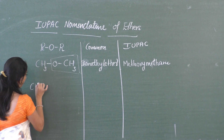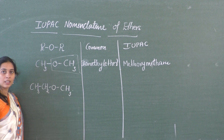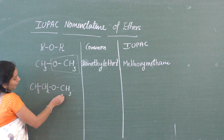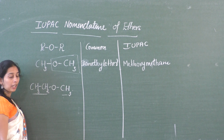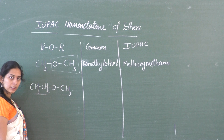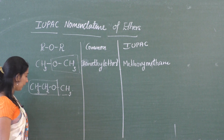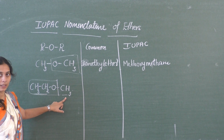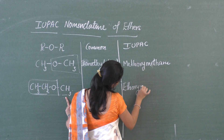If you have a group like CH3CH2OCH3, this is a non-symmetrical ether containing one methyl group on one side and an ethyl group on the other. You have to select the chain with the greater number of carbon atoms as the parent chain. The name becomes ethoxymethane.